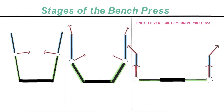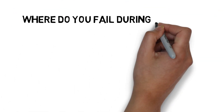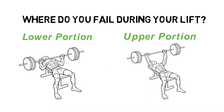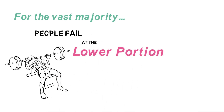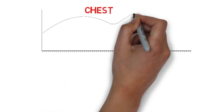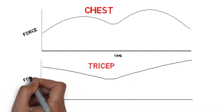It's important to note that only the vertical component matters. The vector for the chest is increasingly vertical, while the vector for the triceps is increasingly horizontal, which means it won't be used as efficiently. My question to you is: where do you fail during your lift — in the lower portion or the upper portion? For the vast majority, people fail at the lower portion. To better visualize this, let's look at a graph of how much force is being applied by the chest as time elapses, and the same for the tricep.